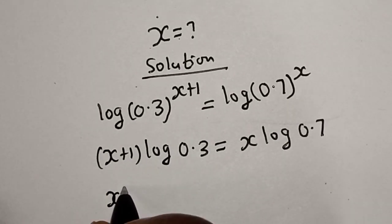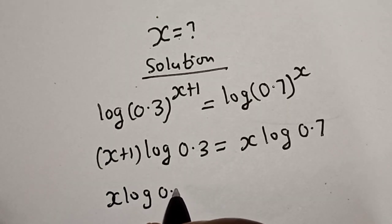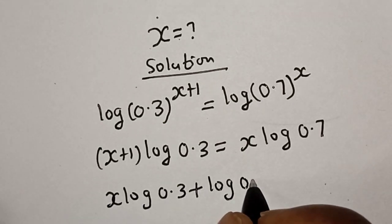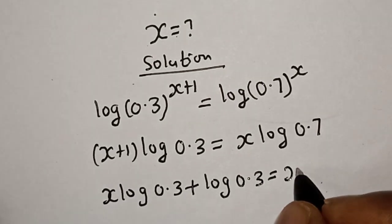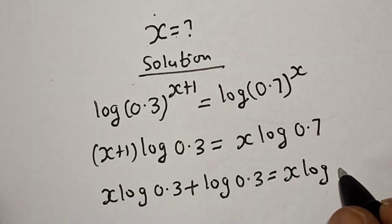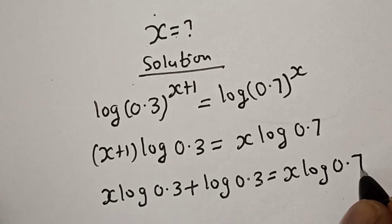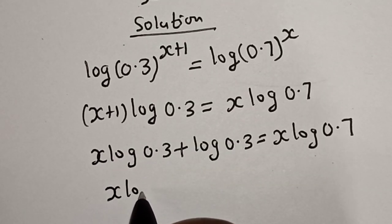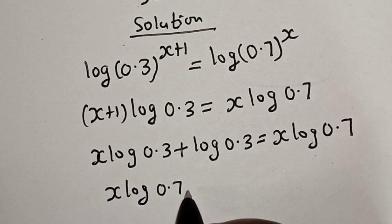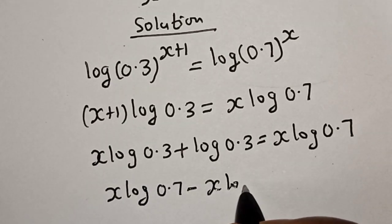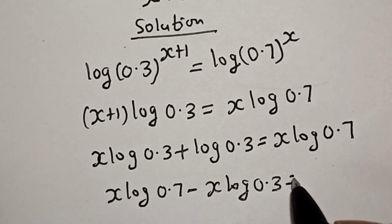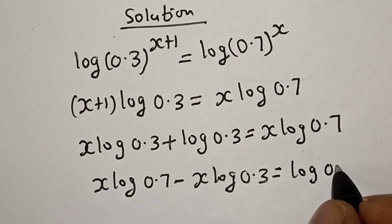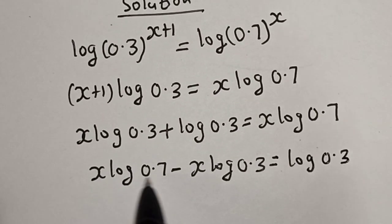Let's expand the bracket: s log 0.3 plus log 0.3 is equal to s log 0.7. Let's collect like terms — moving s terms to one side: s log 0.7 minus s log 0.3 is equal to log 0.3.